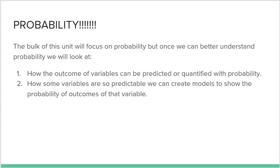This entire unit has a big focus on probability. Every single thing we do, we'll talk about: what's the probability of that? After we have a good understanding of probability, we're going to look at two things: how the outcomes of variables can be predicted or quantified with probability — like driving to school, where I can make predictions based on five years of data — and how some variables can become so predictable that we could create models to show the probability of their outcomes.